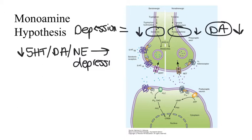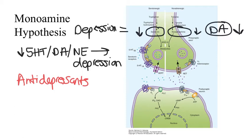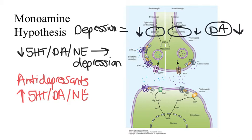That drug is called reserpine, previously used as an antihypertensive but no longer used as such due to significant side effects, including the production of depression. The fact that depletion of these neurotransmitters led to depression then led to the hypothesis that increasing their levels would reverse depressive symptoms. This is supported by the fact that the mechanism of action of almost all antidepressant drugs is to increase concentrations of serotonin, dopamine, and norepinephrine. However, even though antidepressants increase monoamine neurotransmitters immediately, it often takes several weeks for these drugs to have an effect.